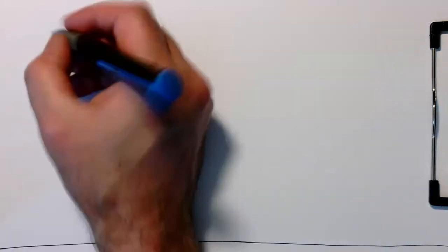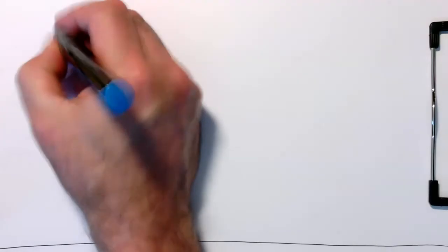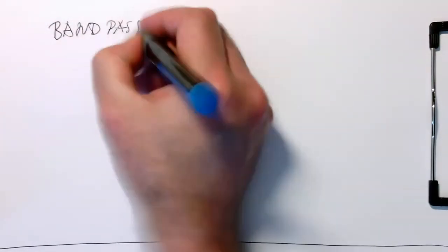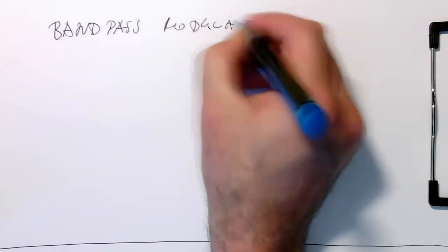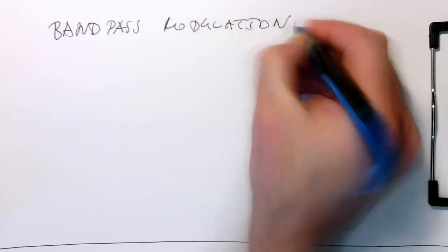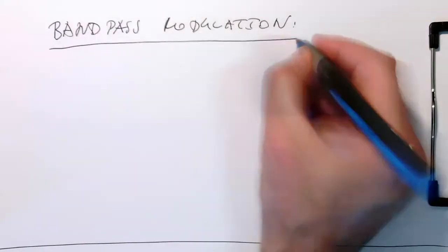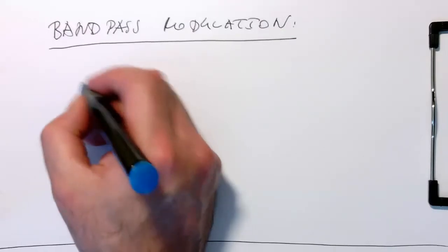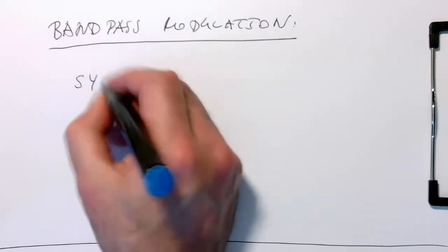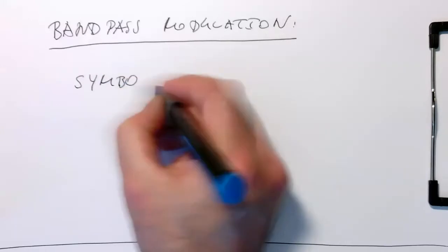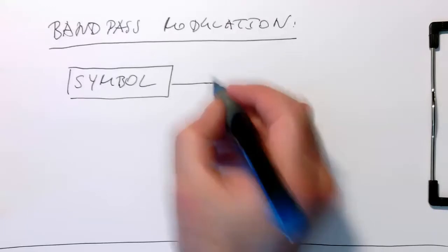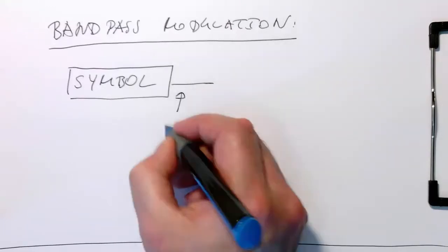Now in this section I'm going to talk about bandpass modulation. Remember, bandpass modulation is in the signal chain where we have symbols. We have a stream of symbols which are in a so-called baseband.